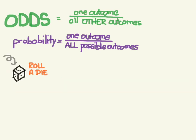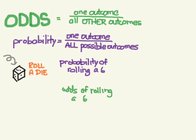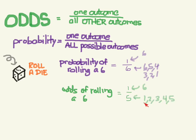Let's look at rolling a die, where the outcome we want is getting a six. The probability of rolling a six: there's one way to roll a six over six possible outcomes — six, five, four, three, two, and one — so the probability is one-sixth. The odds of rolling a six: there's one way to get a six, and all other outcomes are one, two, three, four, and five — five ways. So the odds are one-fifth, or 0.2 to one, which is less than even.